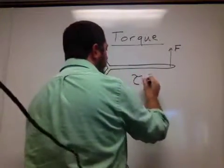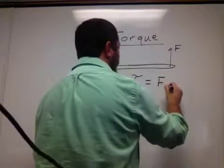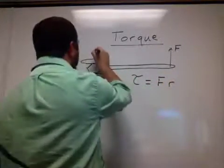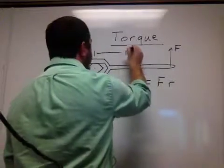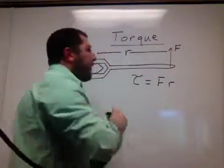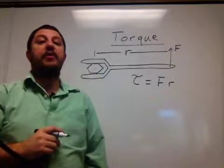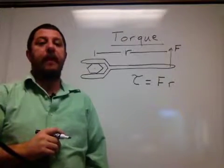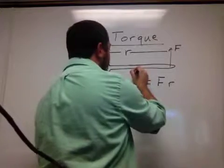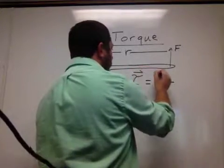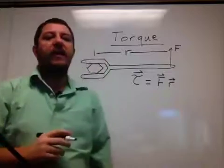Torque is defined as F times R, where R is what we call the lever arm — the distance from the axis of rotation to where the force is applied. Both F and R are vectors.